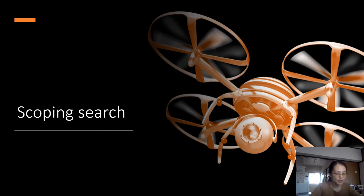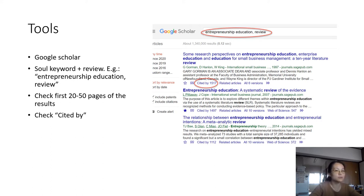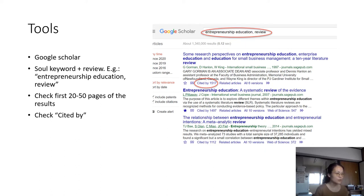Scoping search helps you test the water — to see what kind of systematic literature review studies already exist on your selected topic. To chart the water using scoping search, you can use Google Scholar with your sole keyword. In our case it's 'entrepreneurship education,' and you add 'review' to it. For example, if you are doing research about learning performance and reading frequency, you can type those two keywords adding 'review' to the end and search on Google Scholar.